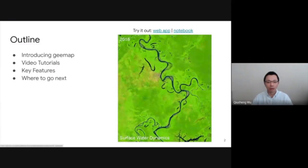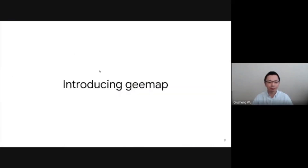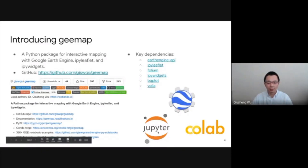You can also click the notebook to see the source code behind this web app. So what is gmap? It is essentially a Python package for doing interactive mapping with Google's engine, ipyleaflet, and also ipywidget. It is open source, hosted on GitHub. You can see some of the key dependencies here, and it can be used with Jupyter-based environments such as Jupyter Notebook or Google Colab.